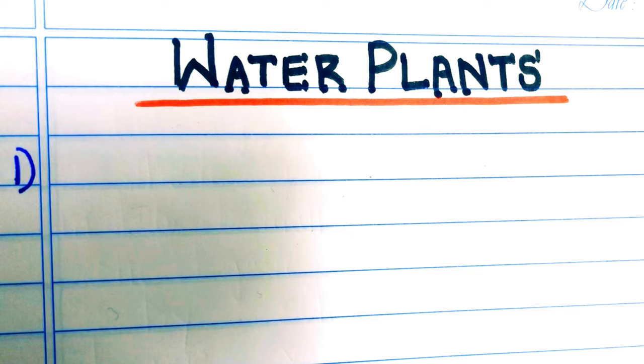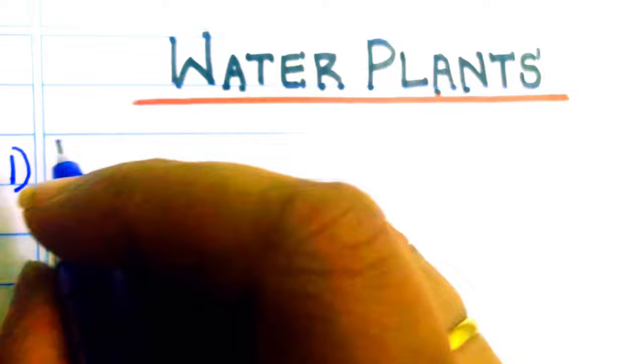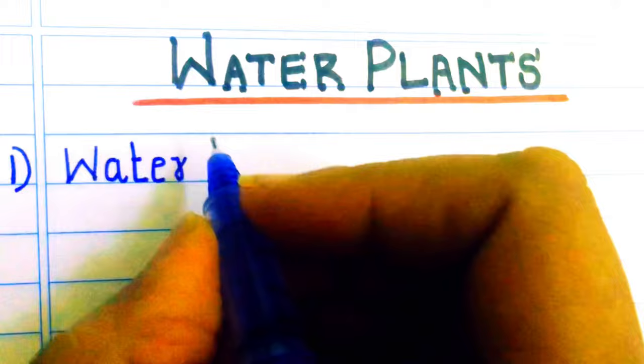In this video we will write 10 water plant names. Water plants are also called aquatic plants, and aquatic plants are the plants that have adapted themselves to live in aquatic environments. So let's start. Water lily.